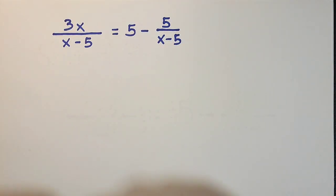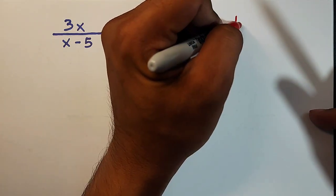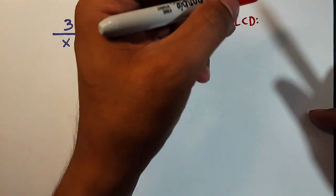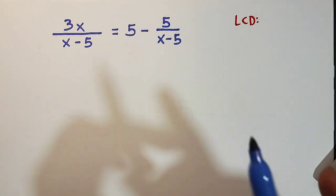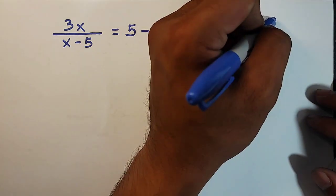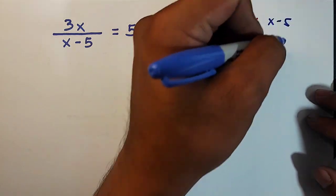First, we need to know what is your LCD. So as you can see here in this given rational equation, the LCD is simply x minus 5.